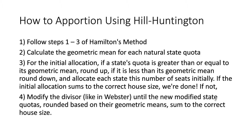Now we can talk about how to apportion using Hill-Huntington's method. The first thing you need to do is follow steps 1 to 3 of Hamilton's method: find the total population, identify the house size, use those two things to find the natural divisor, and then use the natural divisor and state populations to calculate the natural state quotas. The second step is to calculate the geometric mean for each natural state quota.